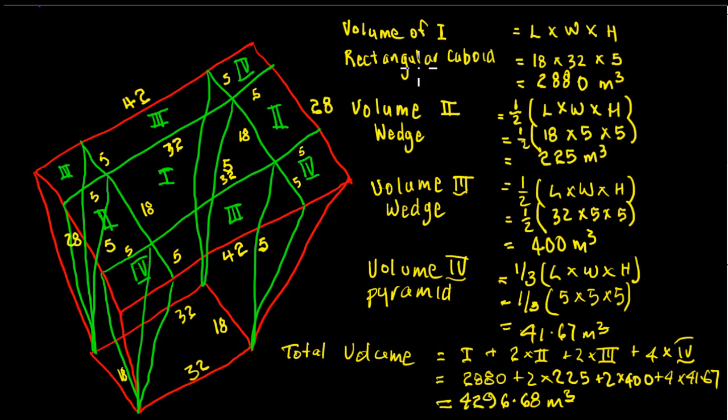So we can see here, obviously, here's our rectangular cuboid: length times width times height. And here's our wedge, which is half length times width times height. And we'll go through those as we go. In each corner, of course, we have a shape here which is a pyramid.